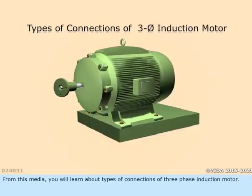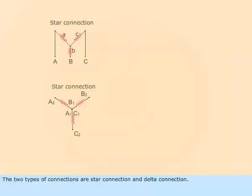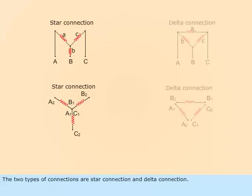From this media, you will learn about types of connections of three-phase induction motor. The two types of connections are star connection and delta connection.